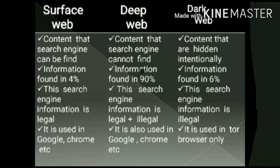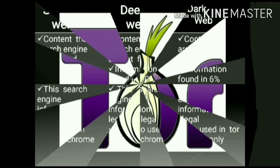This is the difference between these three types. Surface Web content is searchable and accounts for about 4%. The Deep Web is hidden and accounts for about 90%. The Dark Web is illegal and accounts for about 6%. For Surface Web, we can use Chrome or Google. For the Deep Web, we use backend websites. The Dark Web requires a special browser.